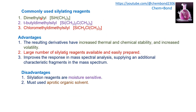Common reagents used are dimethylsilyl group, tert-butyldimethylsilyl, and chloromethyldimethylsilyl group. Advantages of this method include increased thermal and chemical stability and increased volatility of the resulting derivatives. The reagents are easily available and easily prepared. It also improves the response in mass spectral analysis by supporting additional characteristic fragments in the mass spectrum. A disadvantage is that these reagents are moisture sensitive, so the reaction medium must be moisture-free and aprotic organic solvents must be used.